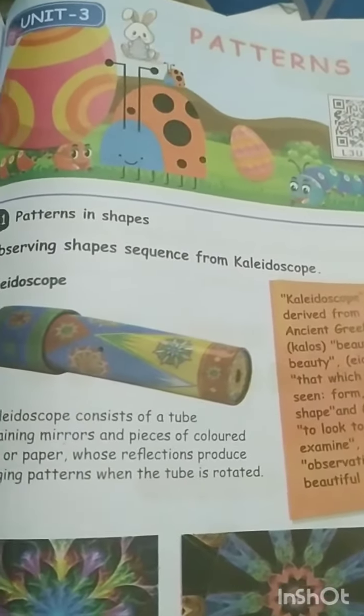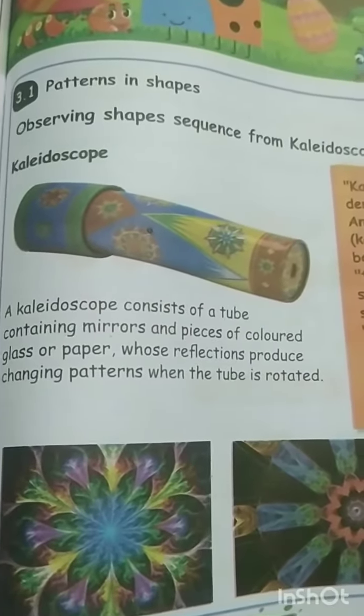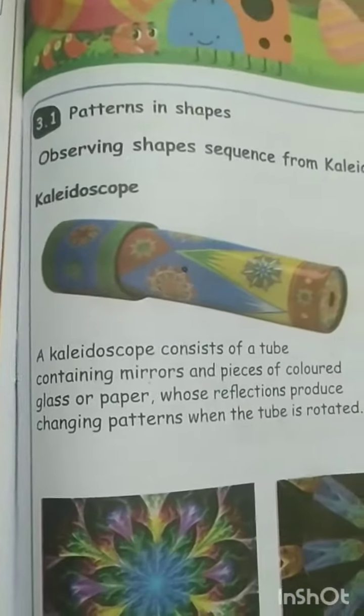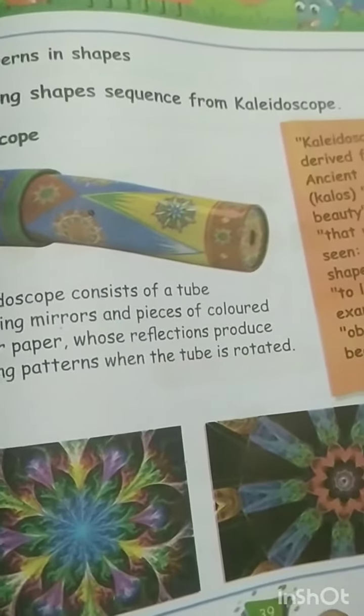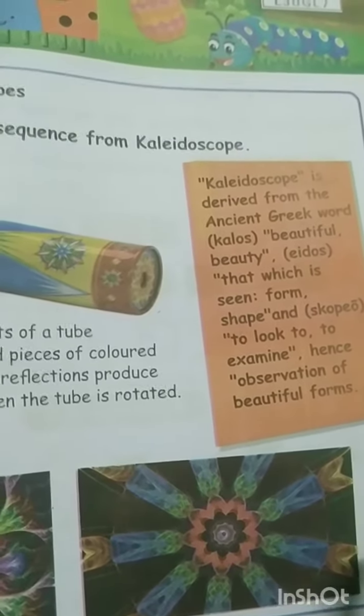This is the third unit. These are the patterns that we know, that we have seen in your clothes, in the paper. All this we have seen this pattern. So kaleidoscope is derived from the ancient Greek word kalos, that is beautiful, it means beautiful. So shape means...